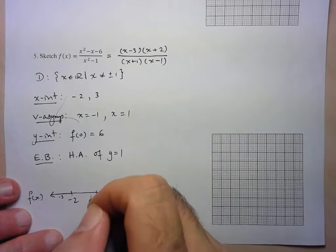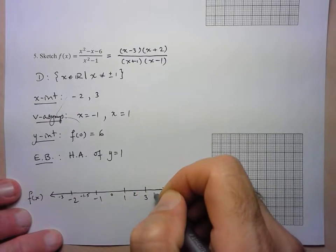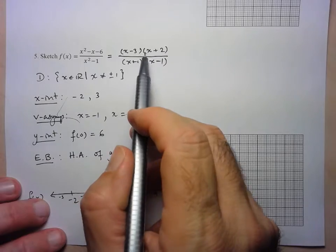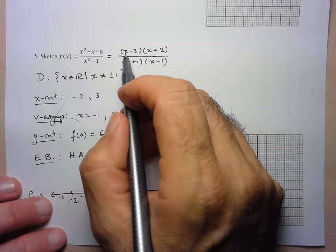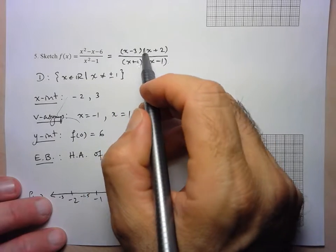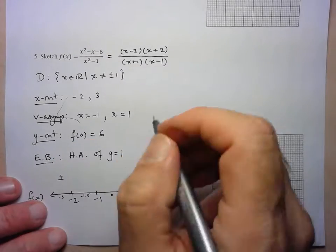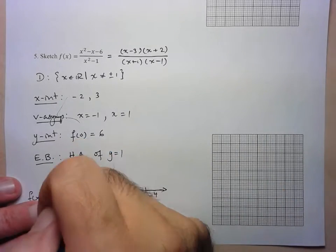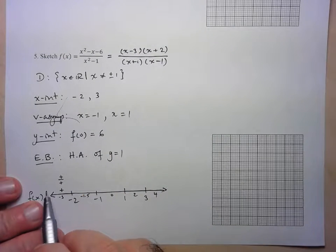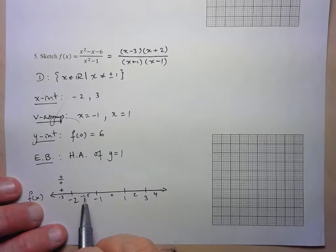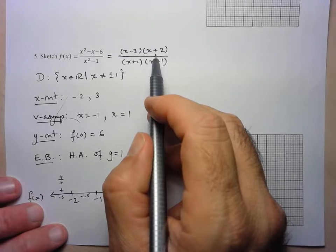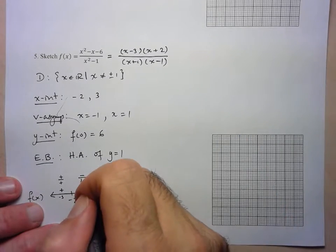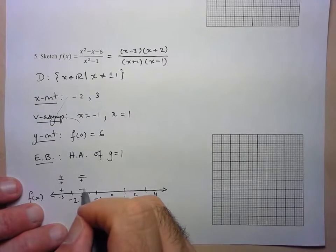For x = -3: numerator gives (-)(-)= positive; denominator gives (-)(-) = positive; result is positive. For x = -1.5: numerator gives (-)(+) = negative; denominator gives (-)(-) = positive; result is negative. I'll use the factored form throughout since it makes determining signs straightforward.